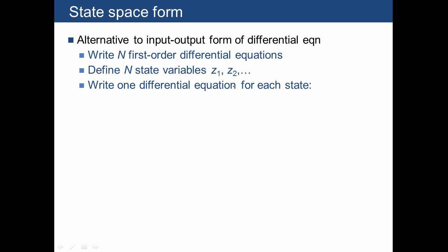Let's be a little bit more specific. Here we're going to use the letter z to denote our state variables, and there are going to be n of them, so we're going to number them 1, 2, all the way through n. And then our goal is to write one differential equation for each state.